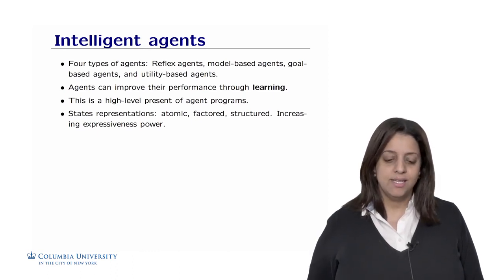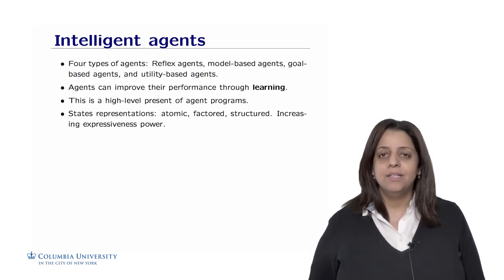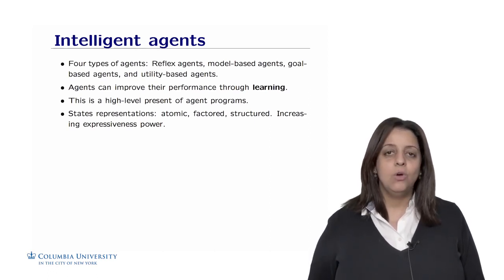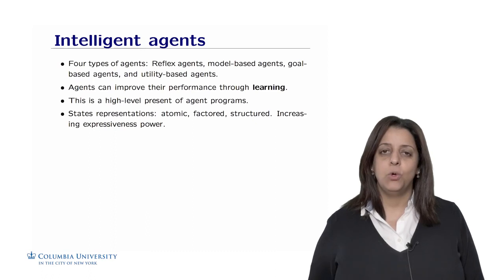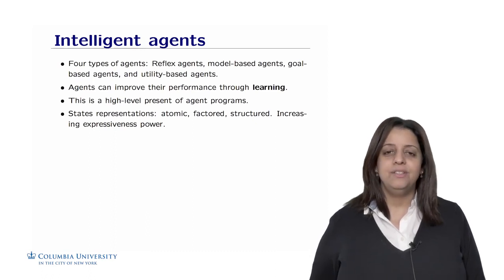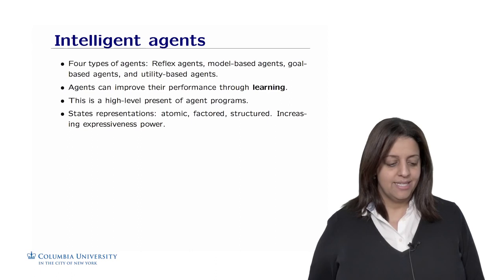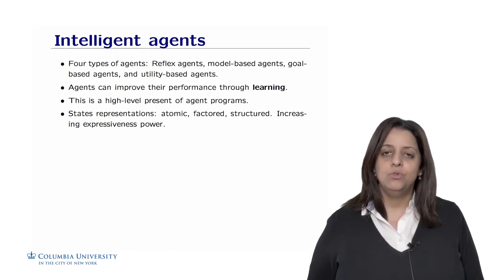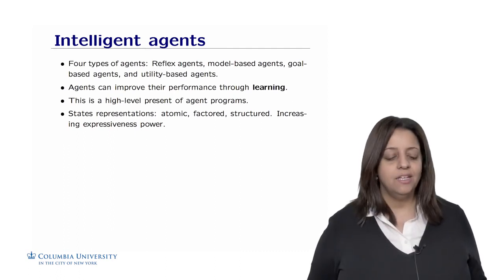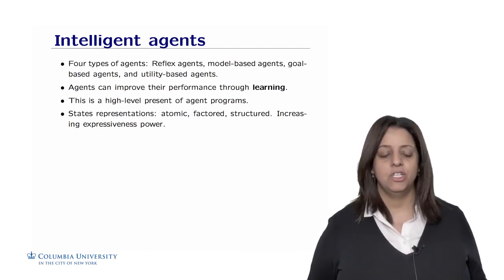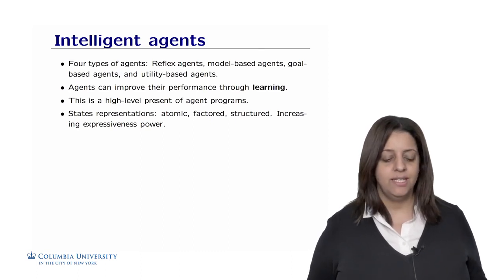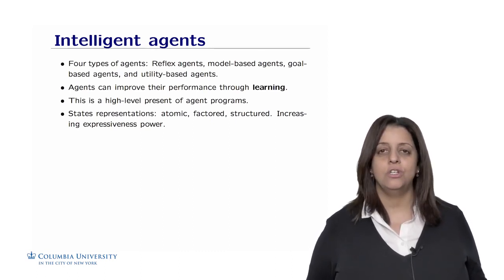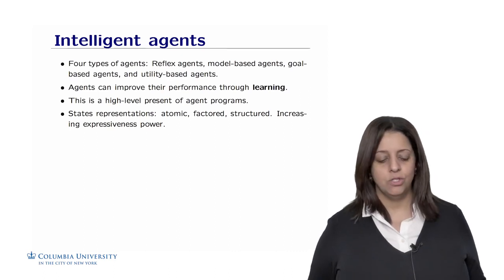We also saw that an agent is a set of architecture or hardware plus a program or system, and both must be compatible to work together. We saw four types of agents: reflex agents (the simplest), model-based agents (which model the world internally), goal-based agents (which model the world and have a goal to achieve), and utility-based agents (which try to maximize their happiness). Agents can also improve their performance through learning. State representation can be atomic, factored, or structured, in increasing order of expressiveness.